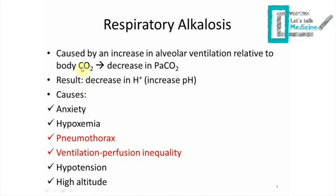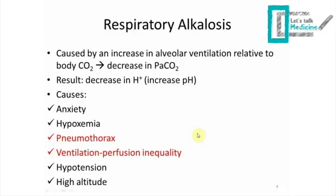Respiratory alkalosis is caused by an increase in alveolar ventilation relative to CO2 production, so CO2 decreases in the body, decreasing hydrogen ions and increasing pH. Causes include anxiety — because anxious patients hyperventilate. Two important causes highlighted in red are pneumothorax and VQ mismatch. A pneumothorax causes atelectasis and a pulmonary shunt, so the remaining working lungs enter a hyperventilating state flushing out CO2. The same mechanism applies to VQ mismatch, which involves both hypoxemia and hyperventilation.